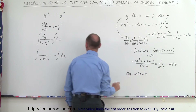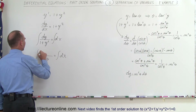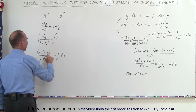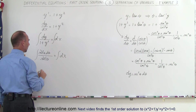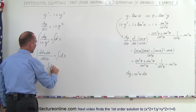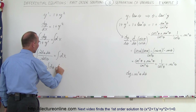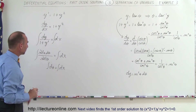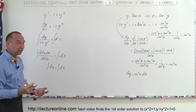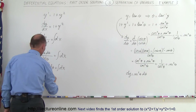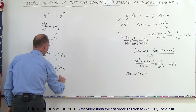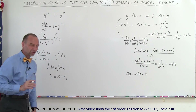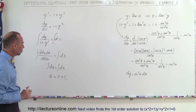Substituting dy equals secant squared of theta dθ into the numerator, the secant squares cancel out, and we end up with the integral of dθ equals the integral of dx. That's a whole lot simpler. The integral gives us theta equals x, plus a constant of integration — let's call it c sub 1.